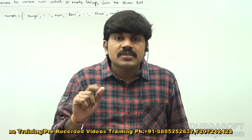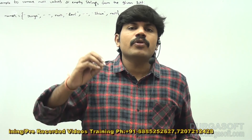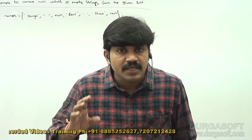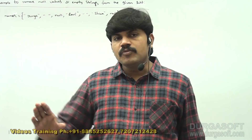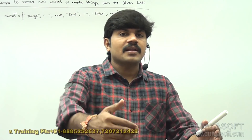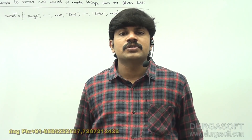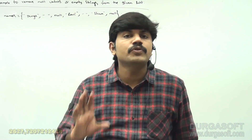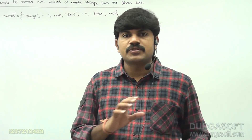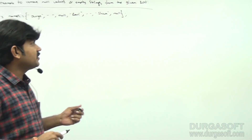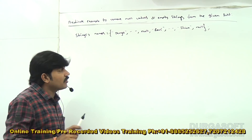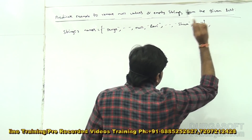This is a very common requirement. Before using that array, can you please remove null values and empty strings? Remove null values, remove empty values, then the remaining list you can happily use — that way we can prevent NullPointerException. For this requirement, to remove null values and empty strings, how can you use the Predicate concept? That example I will discuss with an executable program.